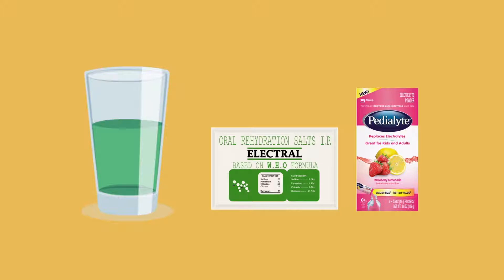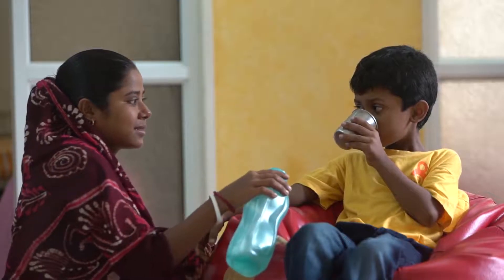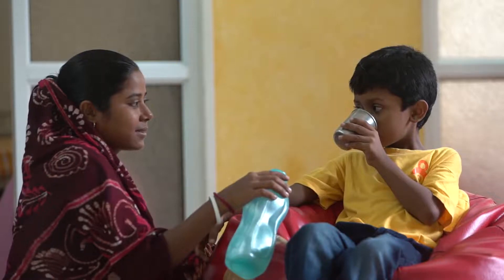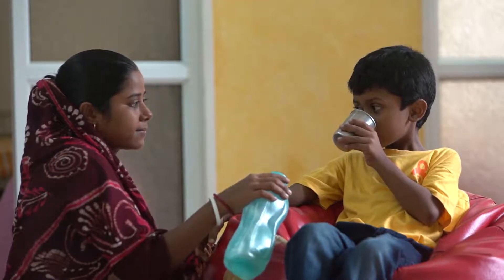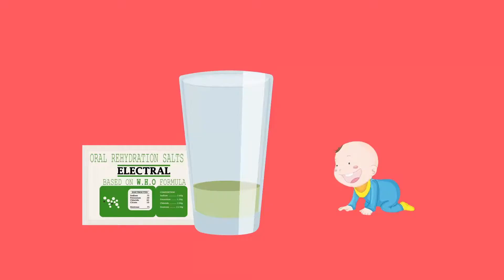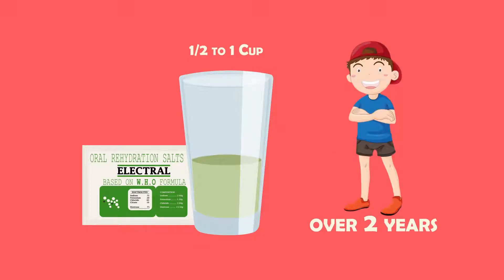It is important to follow the instructions carefully. Let the child sip the ORS drink slowly — the ORS solution should not be gulped down. A child under the age of 2 needs at least a quarter to a half cup of the ORS drink after each watery stool. A child aged 2 or older needs at least a half to a whole cup of the ORS drink after each watery stool.